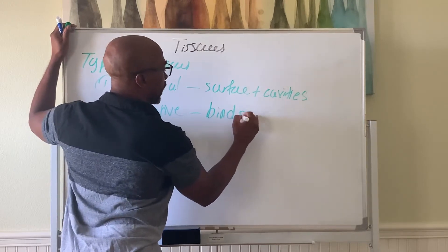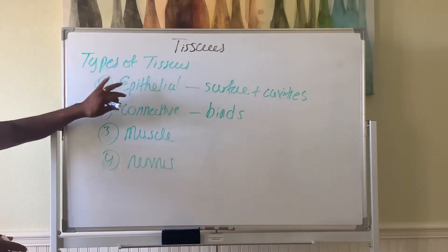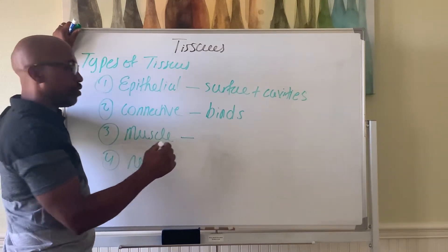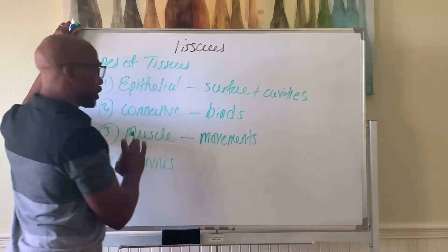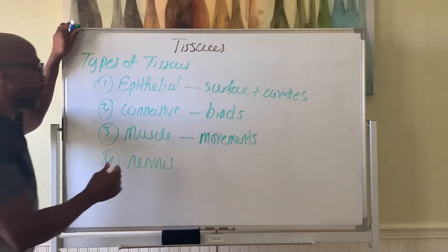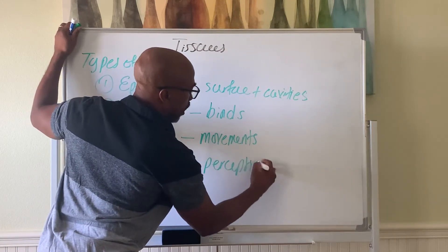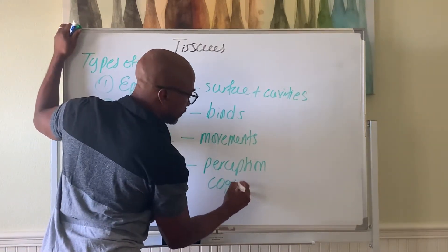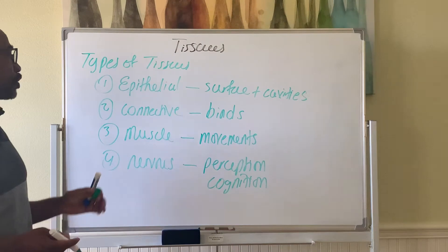Connective tissue binds the body together — things like ligaments, tendons, and bones are all forms of connective tissue. Muscle tissue moves the body, and there are three types: cardiac, smooth, and skeletal. Nervous tissue allows for perception of the environment, sensing, cognition, thoughts, reasoning, and responses to the environment.